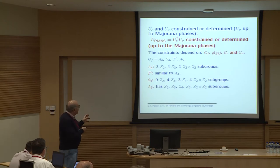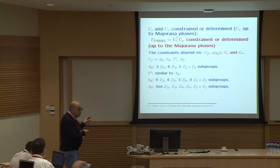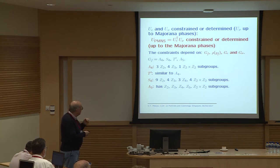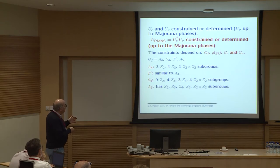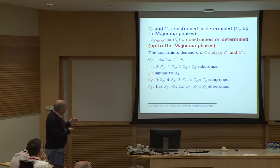The constraints on the PMNS matrix depend on the original non-abelian symmetry, the irreducible representations under which the left-handed charged lepton and neutrino fields transform, and the two residual symmetries in the charged lepton and neutrino sectors. It is important to identify what kind of subgroups the groups under consideration possess.